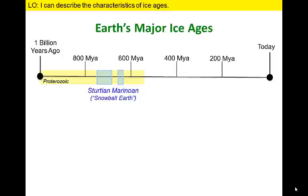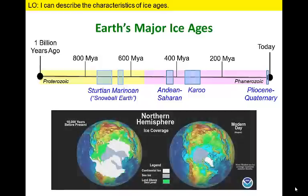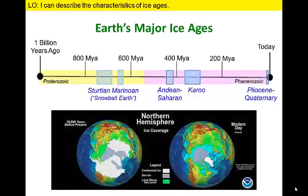Ice ages in the first half of the Proterozoic Era indicate times of cooler temperatures and lower greenhouse gas concentrations. The most recent ice age, the Pliocene-Quaternary, began less than 3 million years ago, and many scientists interpret data from this event to suggest that we are technically still in this ice age. During its maximum extent, a sheet of ice a couple of miles thick would have advanced southward out of Canada before retreating again as climate warmed.